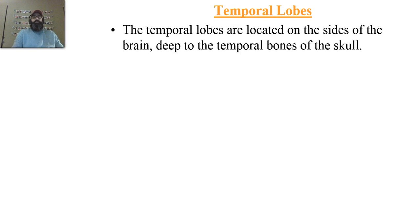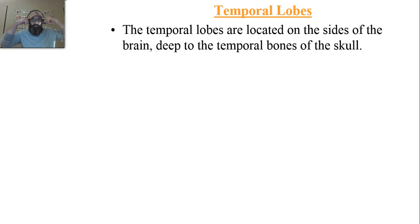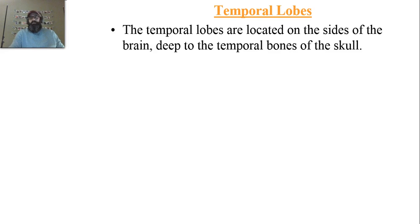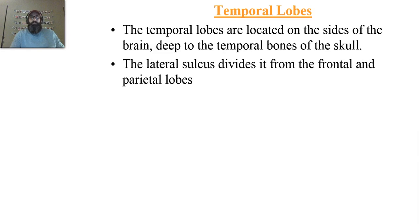The temporal lobes are located on each side of the brain. If you think about where your temples are on the sides of your head, that's essentially where the temporal lobes are located. They are also deep to the temporal bones of the skull — that whole clever naming system about keeping things relative is just unbelievably intelligent.